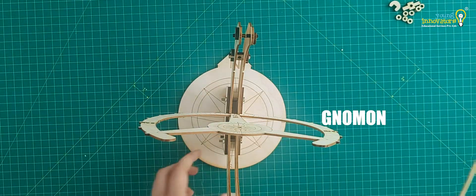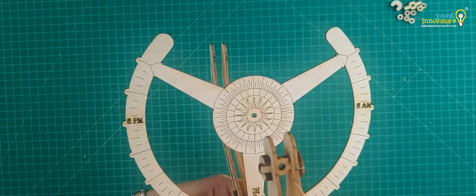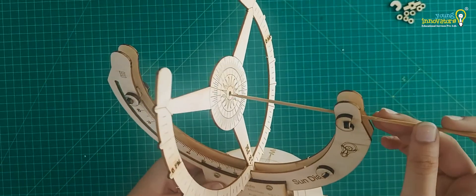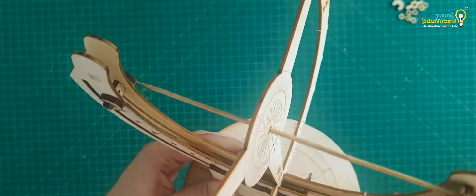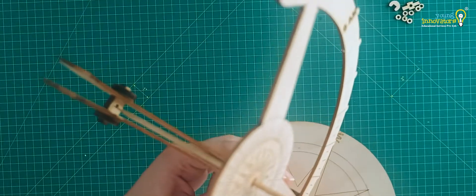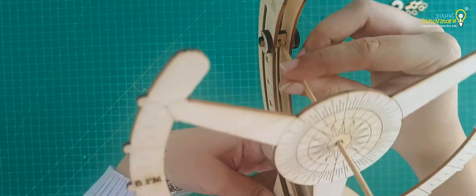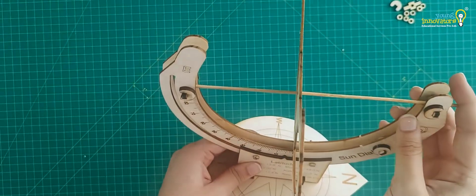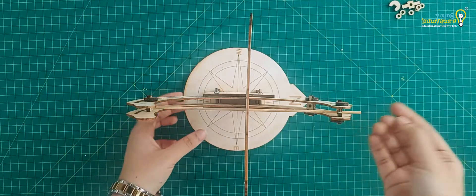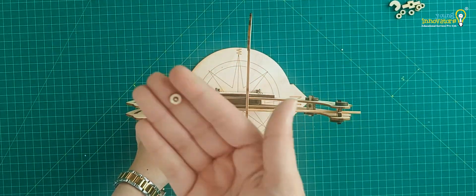Pass the gnomon through the holes on the joints and the dial such that it sits perpendicular to the dial. Glue the stoppers on four ends to lock the dial and the gnomon in place.